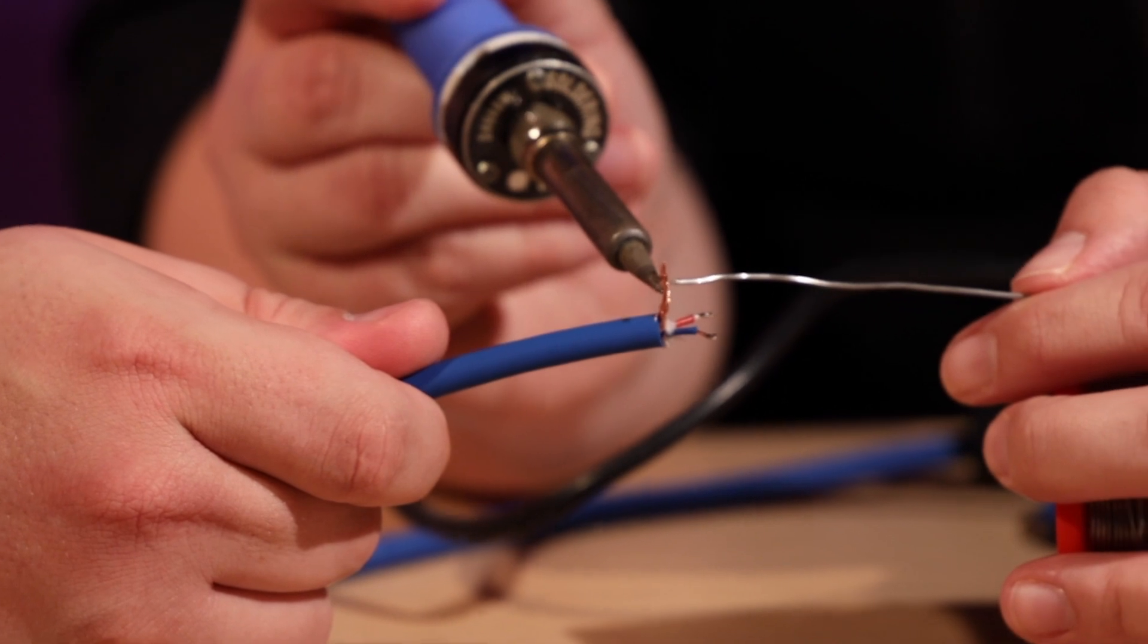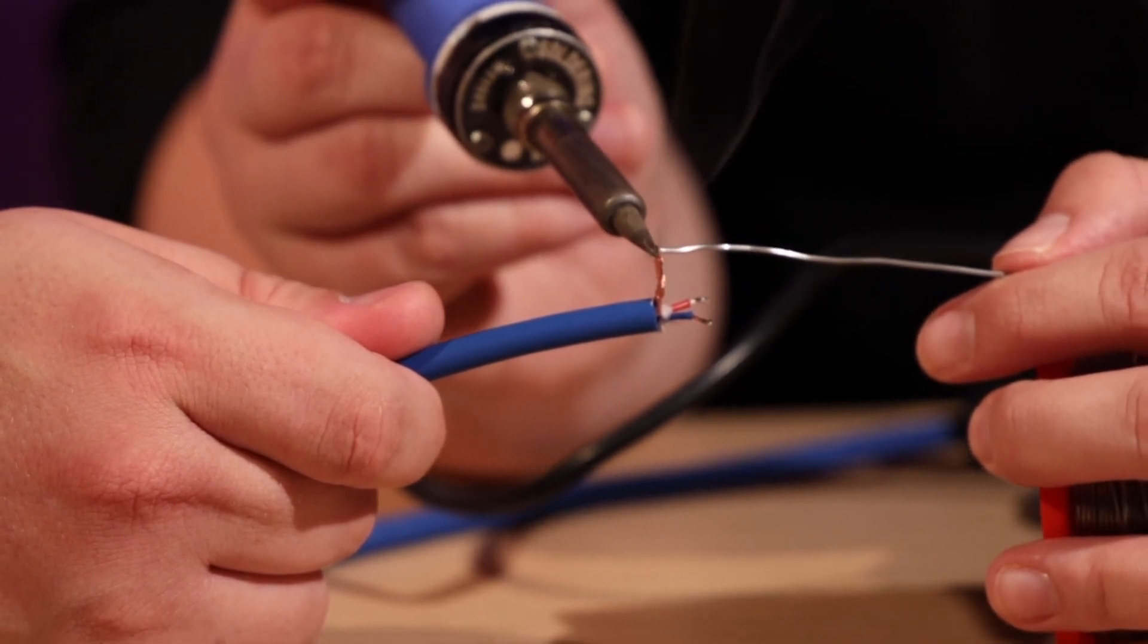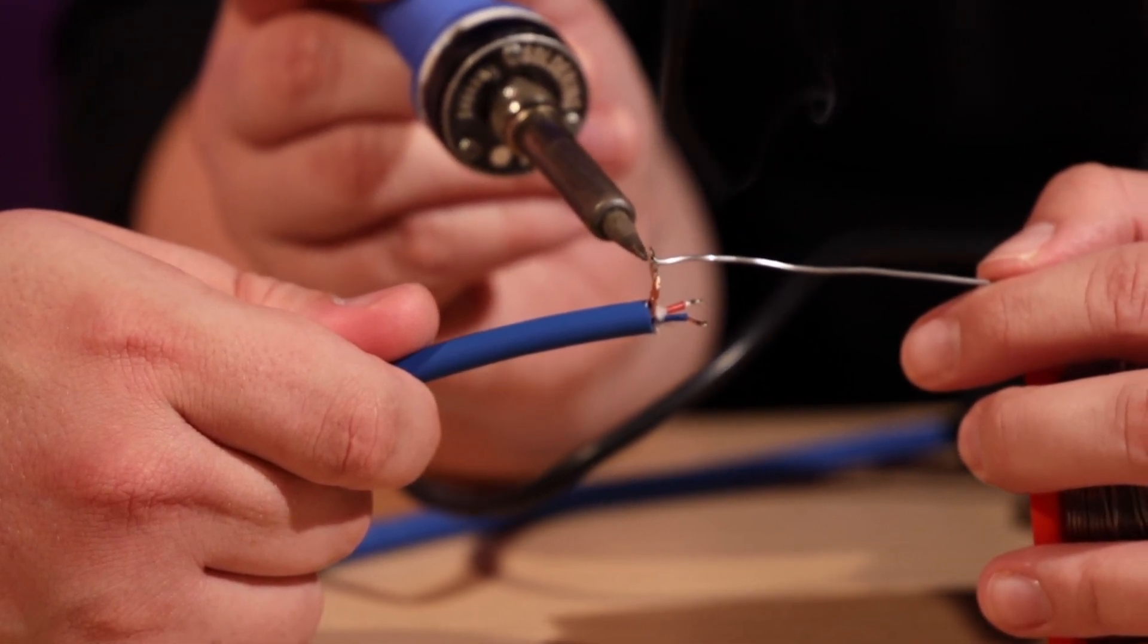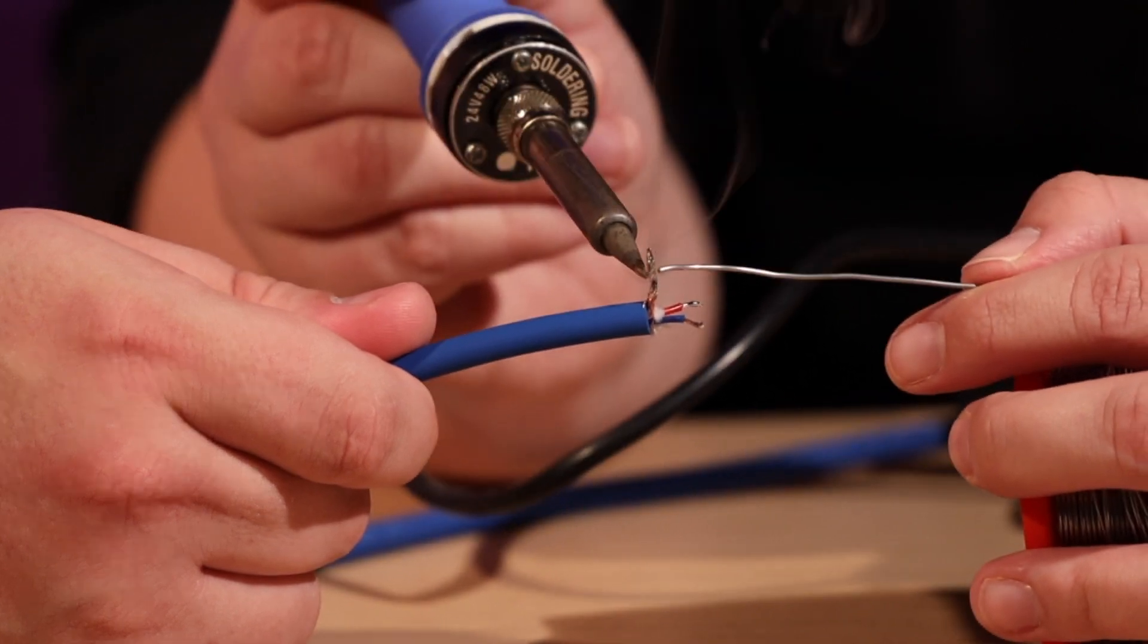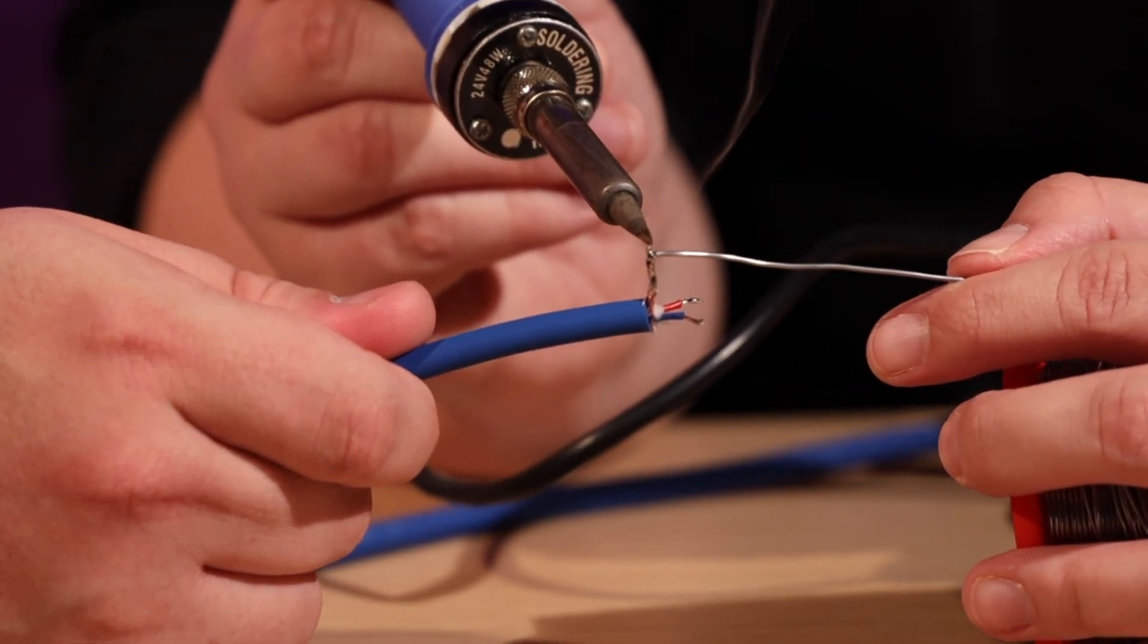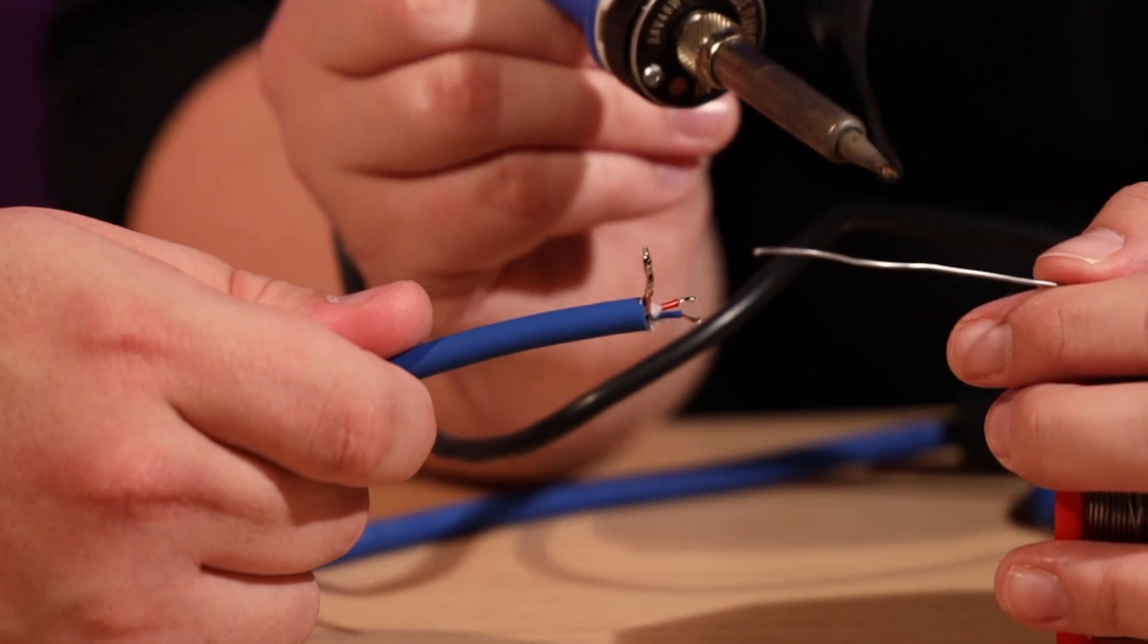So I just take the solder and I just take a little bit and just drop it on to the cable. I don't need a lot. I just want to stop it from fraying. I put a little bit more on the ground cable so it won't fray as much. And that solder just sucks right in there.